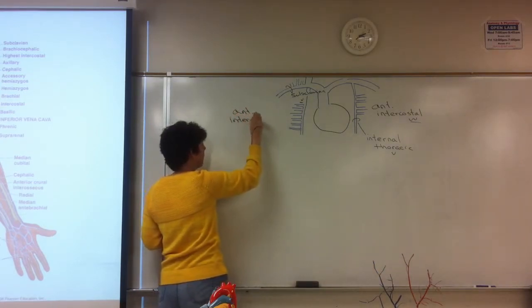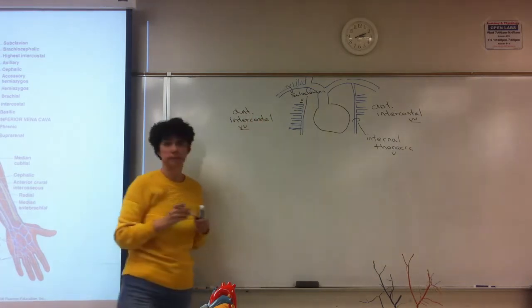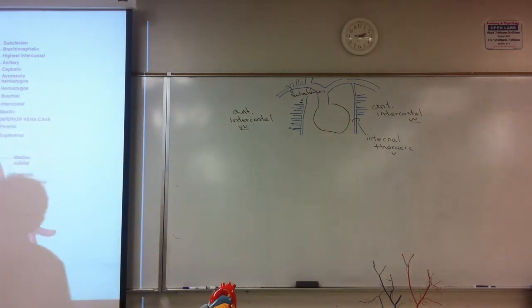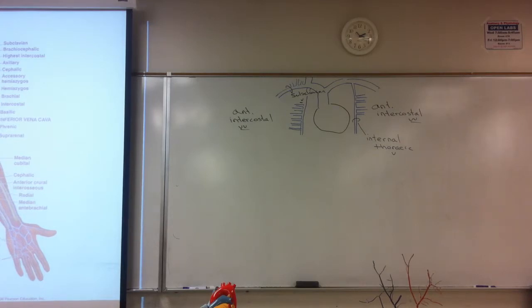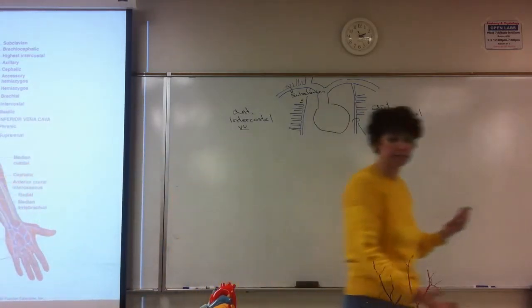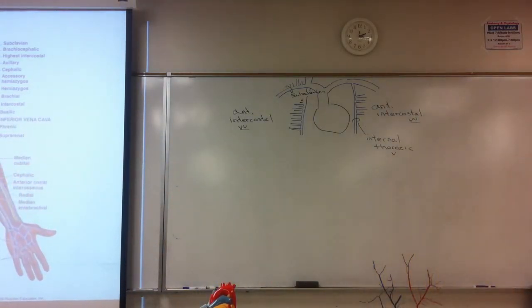Now where did our posterior intercostal artery come from? The posterior of the aorta — the thoracic component of the descending aorta. So our posterior intercostal veins — there's no vena cava behind the heart. So we have to come up with some other system.